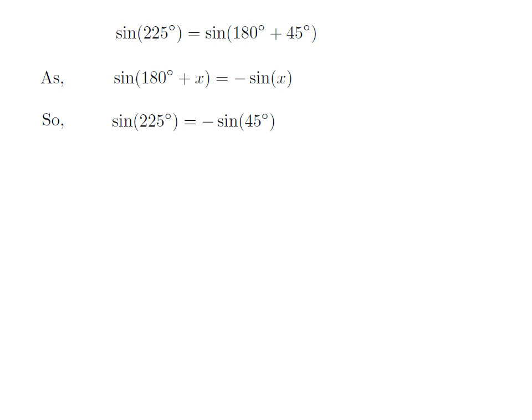Let us apply the above identity for sine of 225 degree. Here, x is 45 degree, so sine of 225 degree is equal to minus sine of 45 degree.